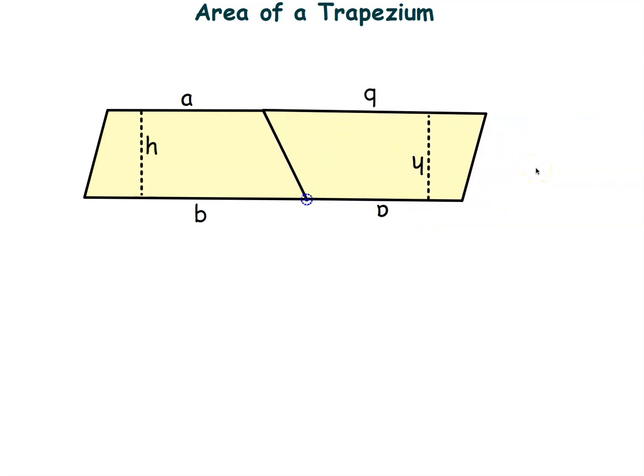And once again, I've got two trapeziums. So I can say, well, that's twice the area of one trapezium, so 2A. And what I have here is yet another parallelogram, which is just length times width. In this case, the length is a plus b, so that length is the same as that one, so a plus b in brackets.